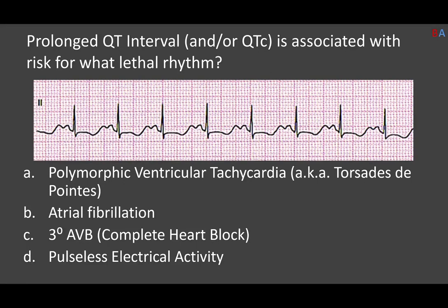Prolonged QT interval and/or QTC is associated with risk for which lethal rhythm? Looking through the list: AFib is not a lethal rhythm. Third-degree heart block can be lethal but doesn't really relate to prolonged QTC. Pulseless electrical activity — also not in that realm. That really just leaves us with polymorphic ventricular tachycardia, also known as torsades. The big lethal rhythm risk for prolonged QT interval is winding up with a polymorphic VTAC.